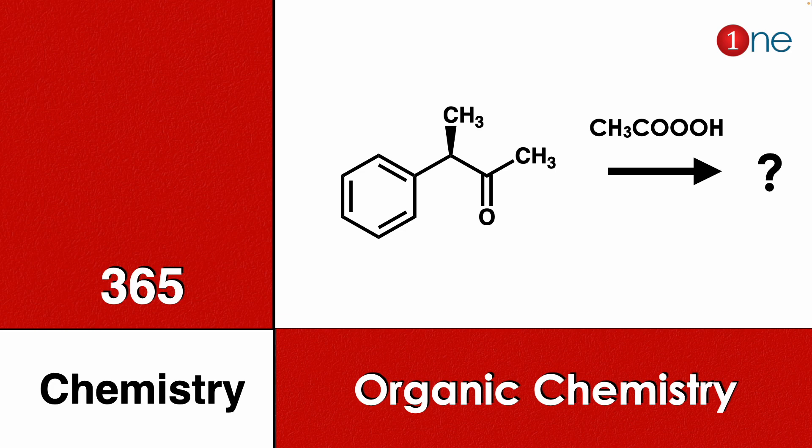Welcome to One Chemistry. This is the 365 Chemistry Series — organic chemistry questions for you. Here you have a ketone: one side is attached with a methyl group, another side is attached with a tertiary group which includes a phenyl, and you are using a peracid. You have to find what will be the final product.